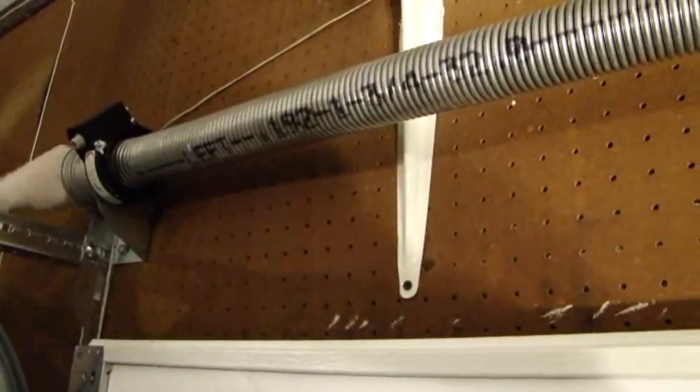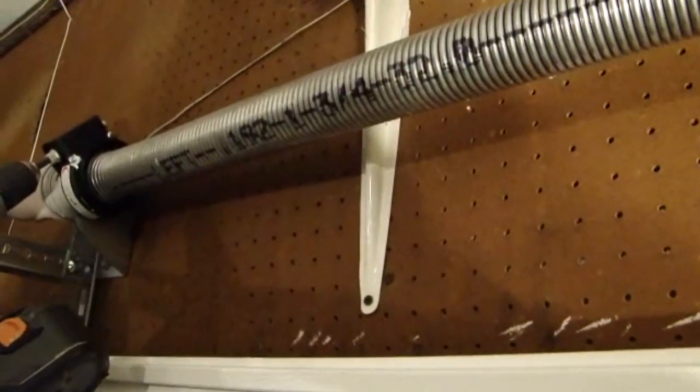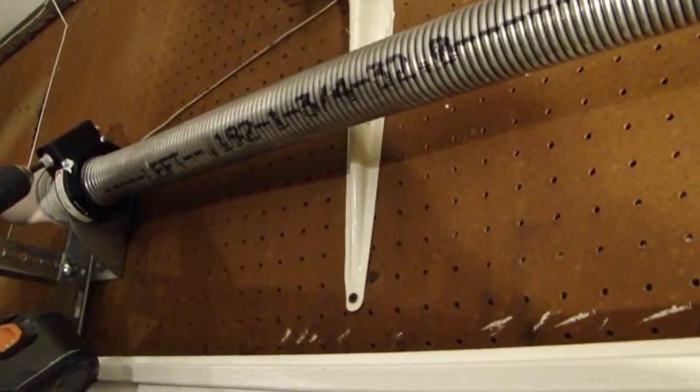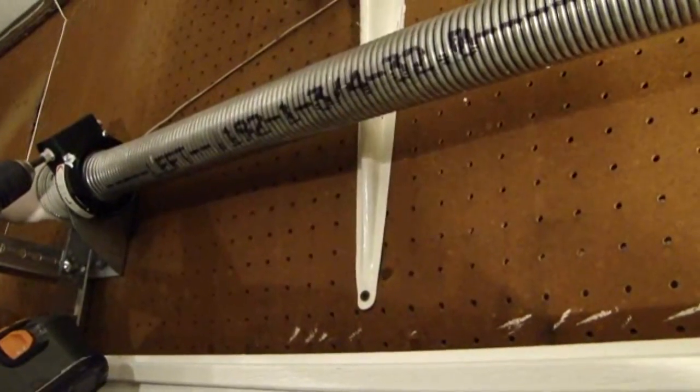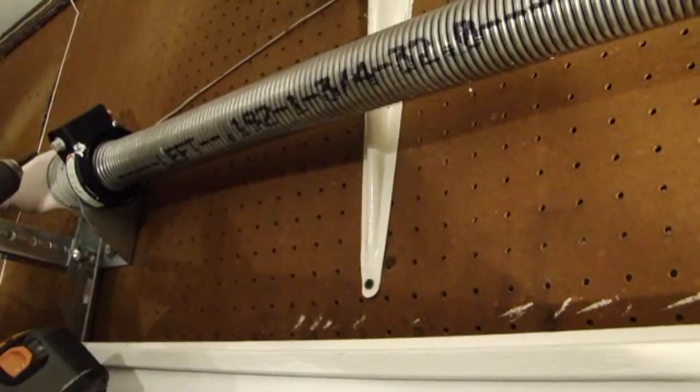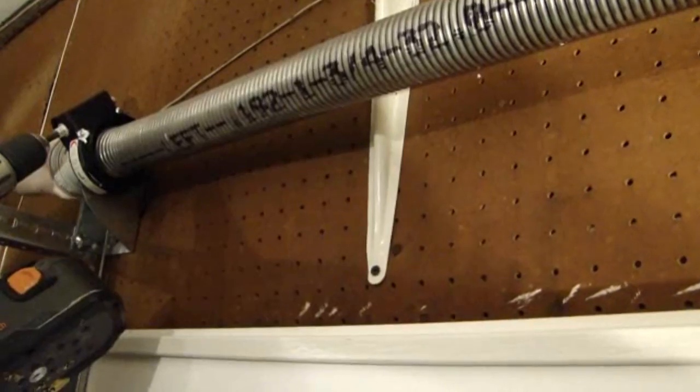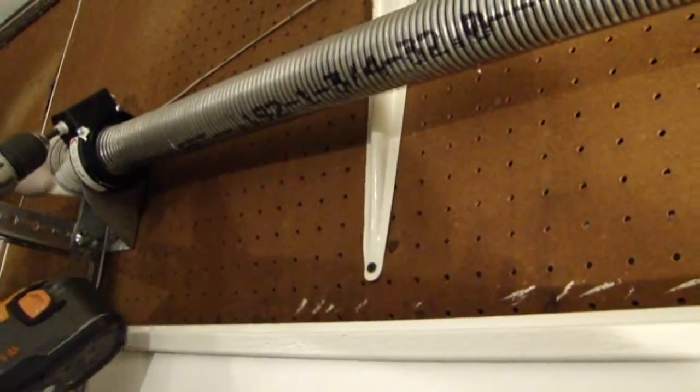And also note, right now, this whole assembly is still pretty loose. And I believe for a nine-foot door, they say to start with like eleven-and-a-half turns. And that don't mean eleven-and-a-half turns on this screw here. That's not what they're talking about. But I'll show you what they mean here in a minute.